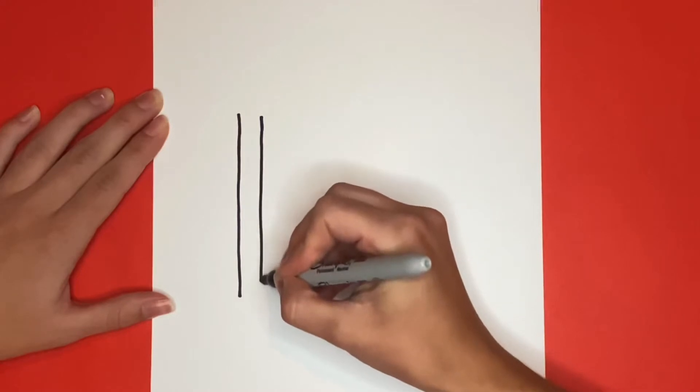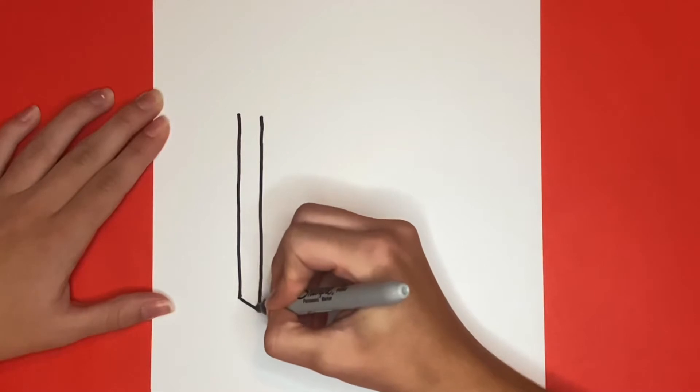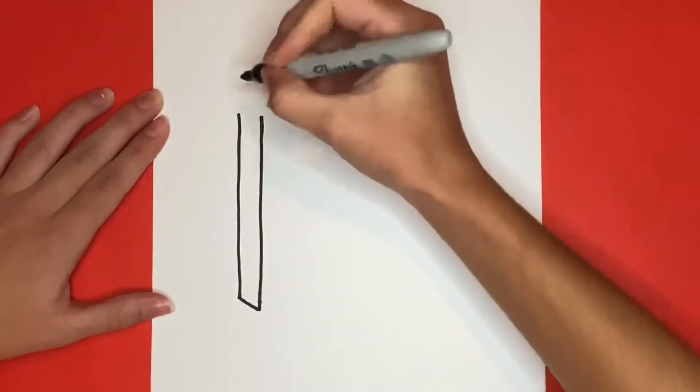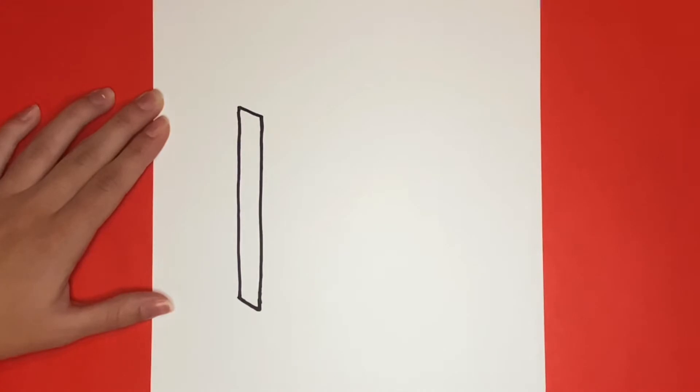We will make this one go a little bit longer than the other one, and then we will draw a diagonal line connecting the two. Then we will connect the lines at the top as well with another little diagonal line. Great job! This is the spine of our binder.